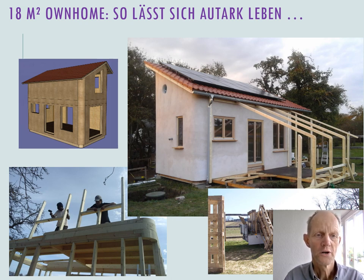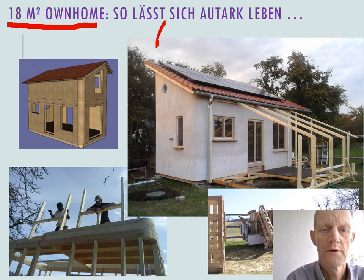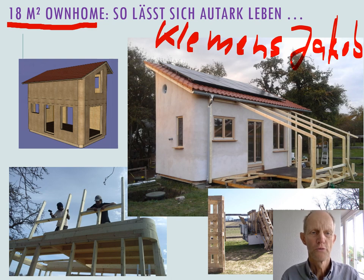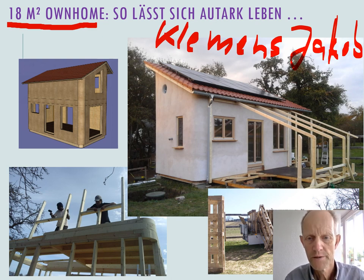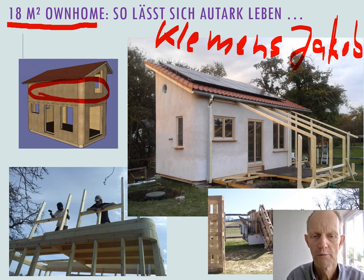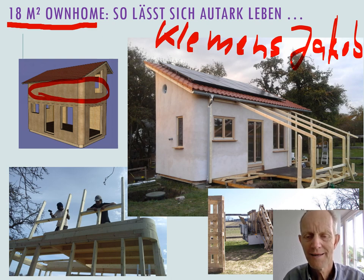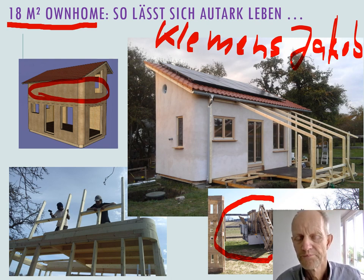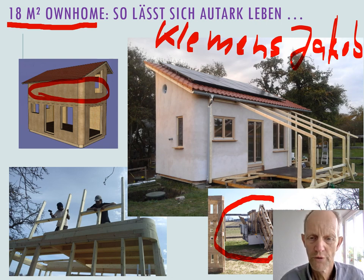Then there is the own home of Clemens Jakob — ownhome — a great house of 18 square meters with sleeping space upstairs. I've stayed in it three times when giving presentations there, and it's very cozy and interesting. It can be brought in on a truck, though it's not made for being taken apart and mounted elsewhere — but that could be done in other concepts.